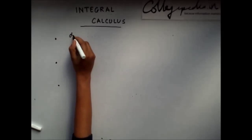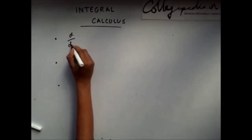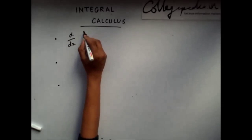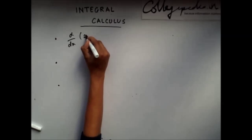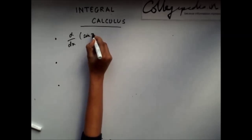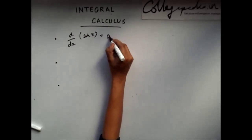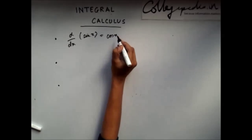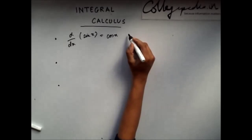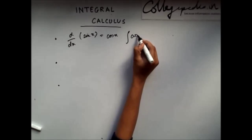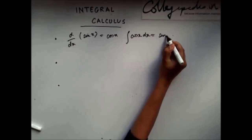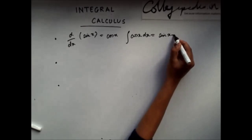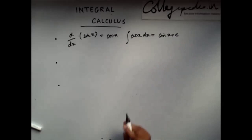Next formula: some trigonometric functions. The derivative of sin x is cos x. So, if I integrate cos x, I will get sin x plus some constant C.